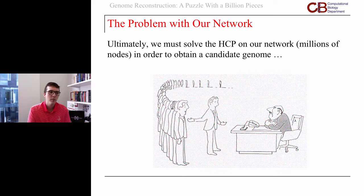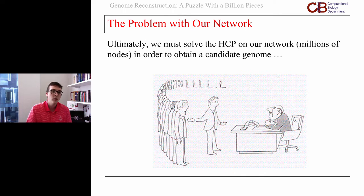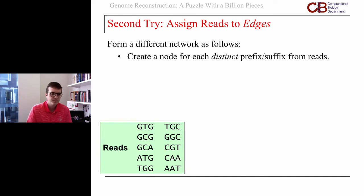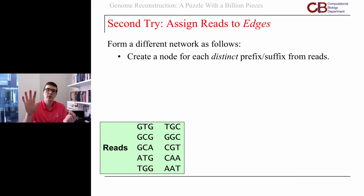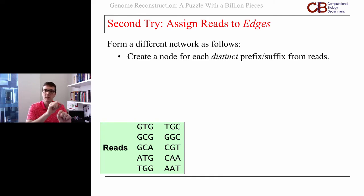Maybe a better idea would be: if we know the Eulerian cycle problem is easier to solve, why don't we model genome assembly using an Eulerian cycle problem? We can form a different network — we're going to create a node for every distinct prefix and suffix from our reads. The goal is to get the reads on the edges rather than on the nodes. If we can map the reads to edges, then finding every read means traversing every edge, and that's an Eulerian problem.